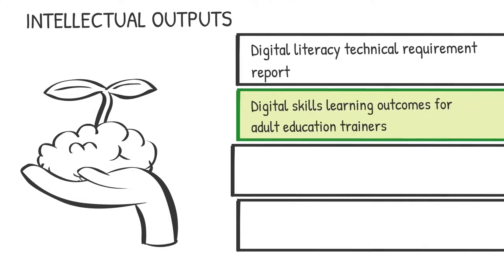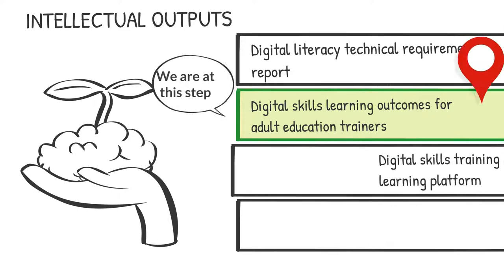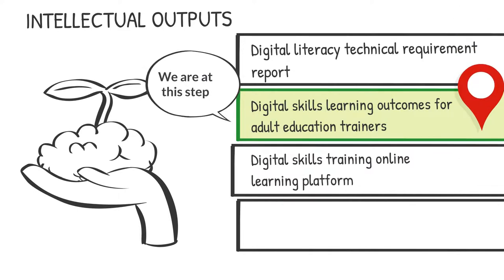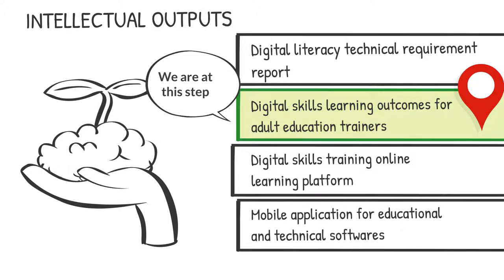Our project has four intellectual outputs: one, digital literacy technical requirement report; two, digital skills learning outcomes for adult education trainers; three, digital skills training online learning platform; four, mobile application for educational and technical software.